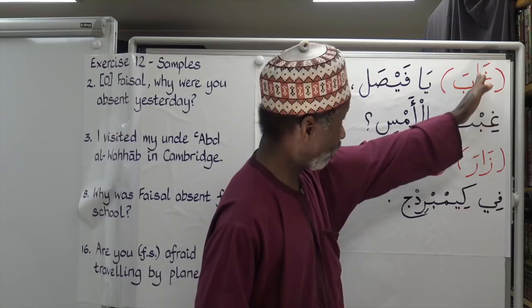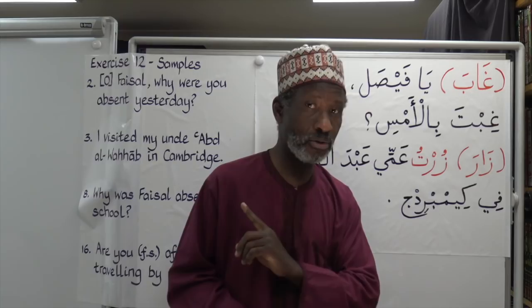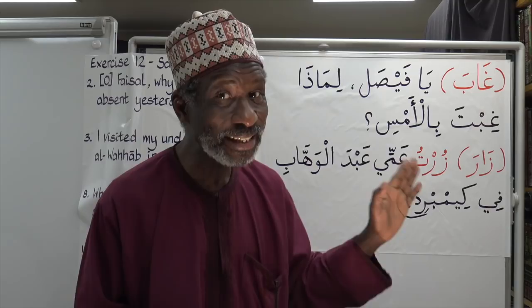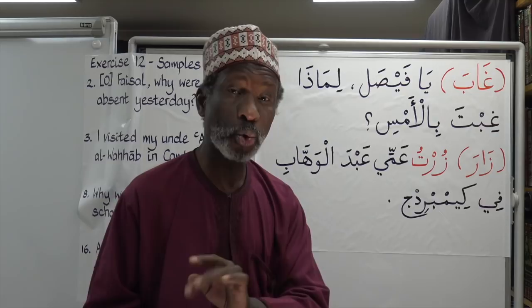Now the alif, as you already learned when we were conjugating the hollow verb, that alif is not the true representation of the second root letter. Rather, it may be waw or ya, but in this case it's ya — because you know that when you look at the present tense, the ya is the actual second root letter.